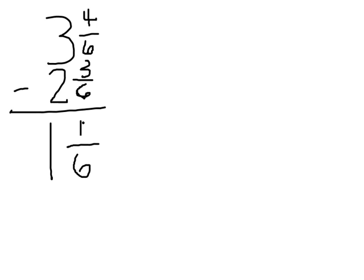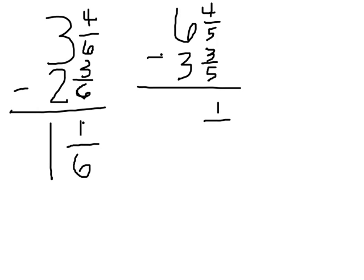Let's try another one. Let's do 6 and 4/5 and we want to subtract 3 and 3/5. Start with my fractions. 4/5 minus 3/5. 4 minus 3 is 1 and the fifths stay the same and then move to my whole numbers. 6 minus 3 is 3. So 3 and 1/5.